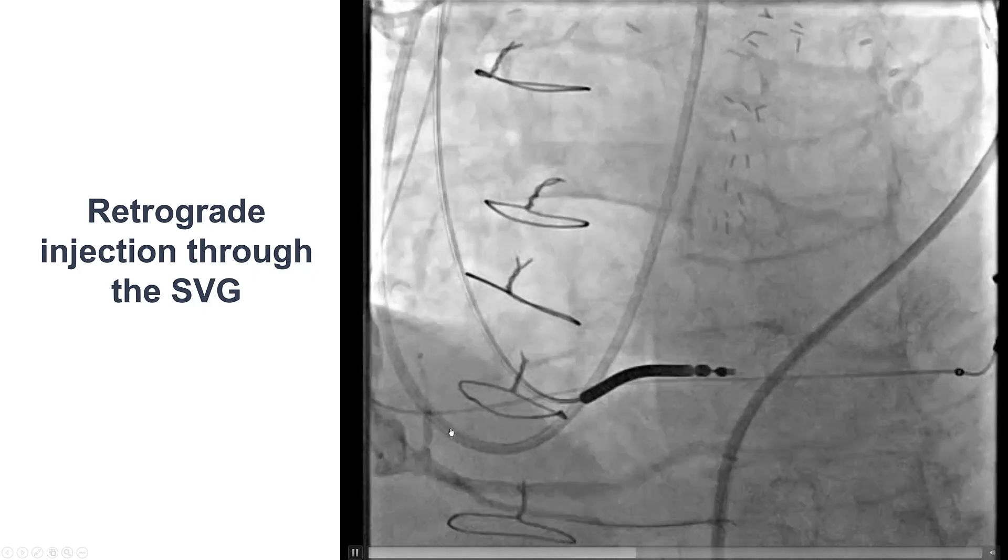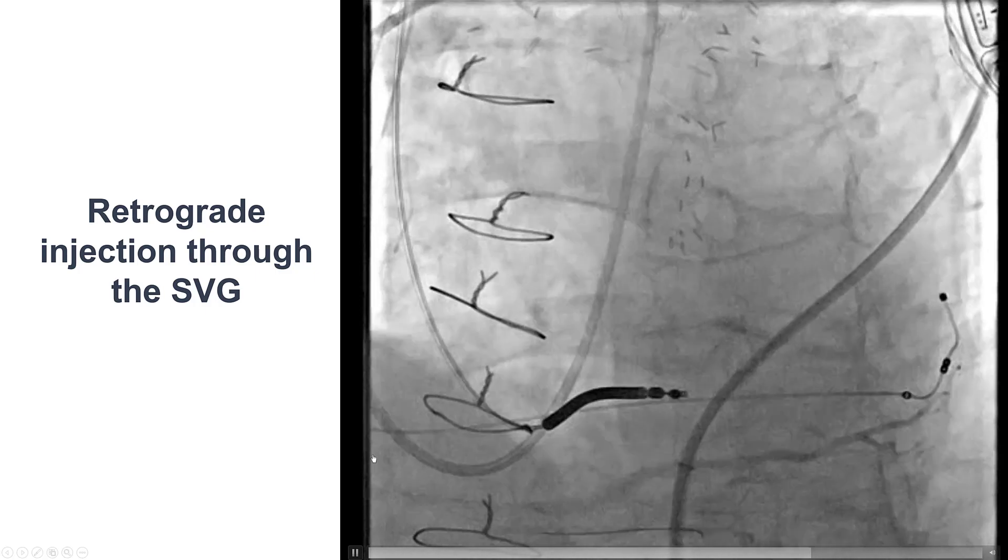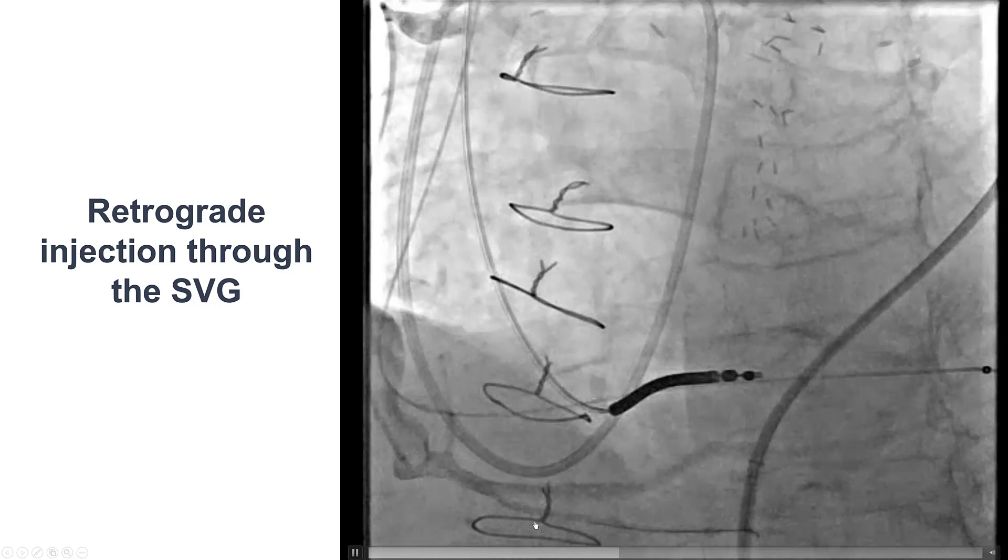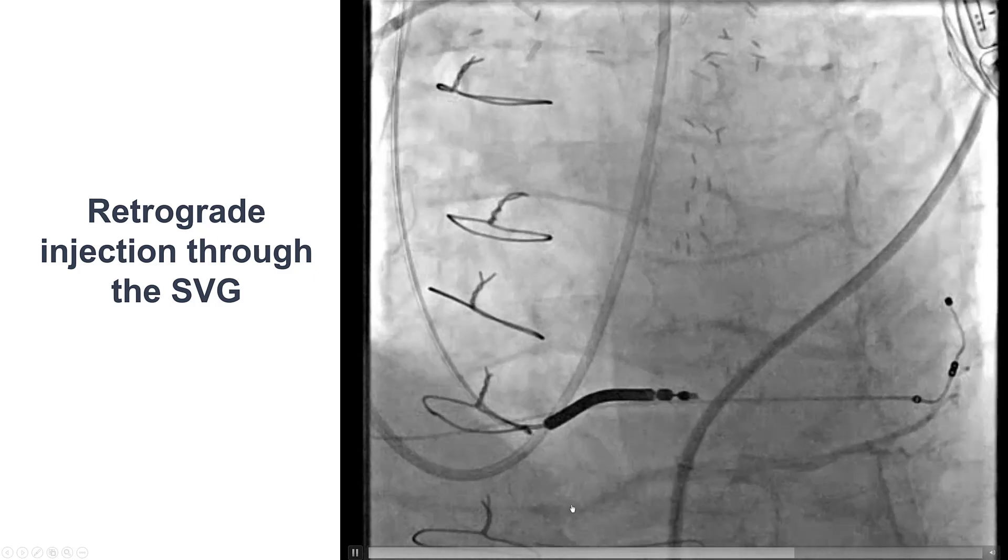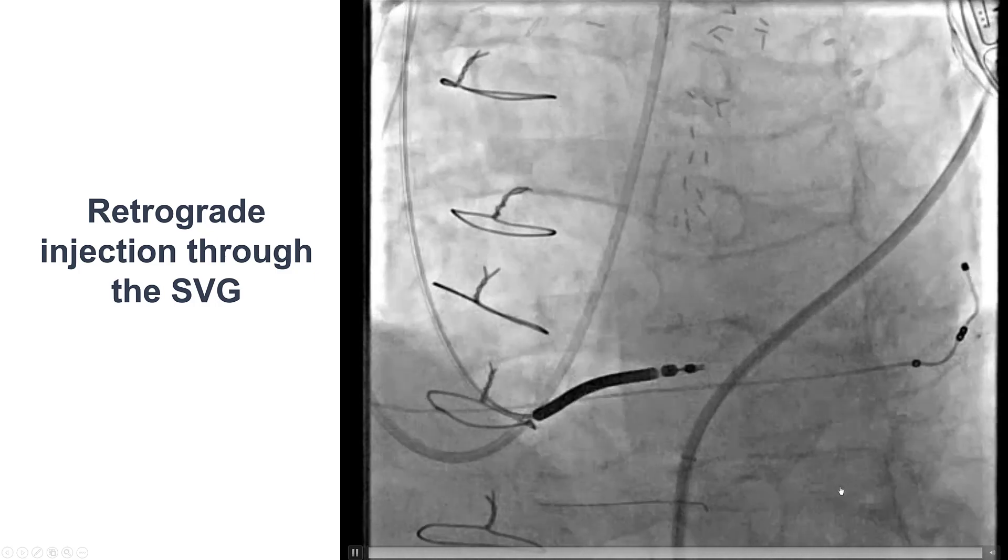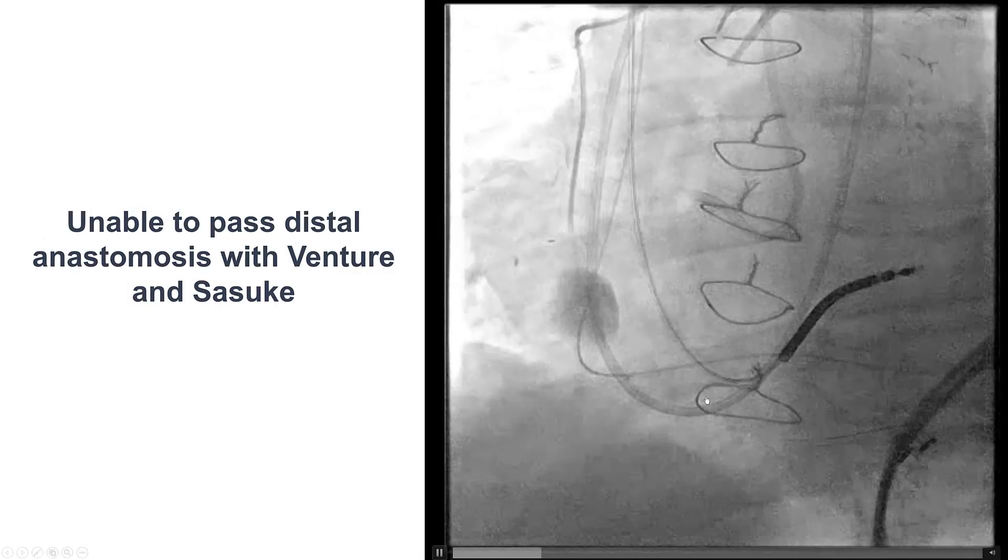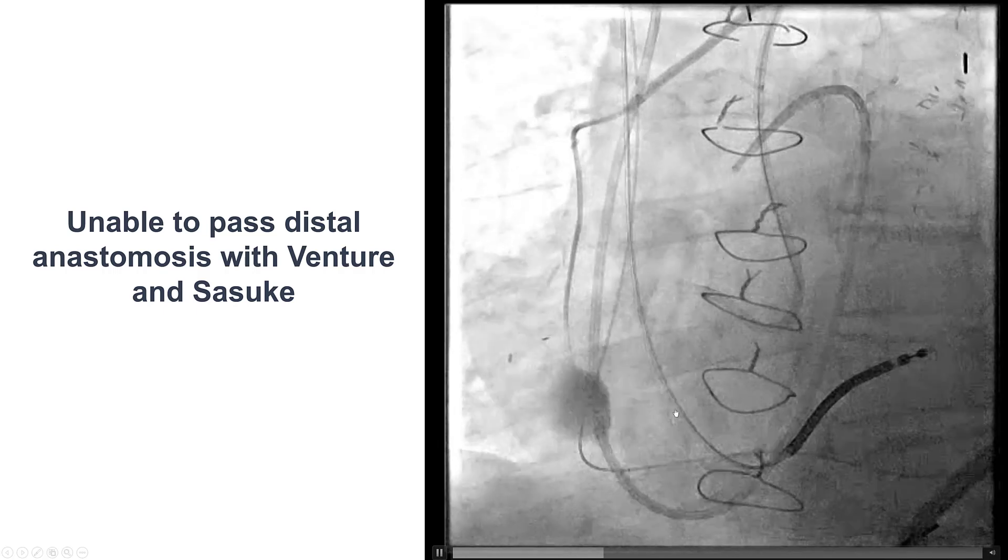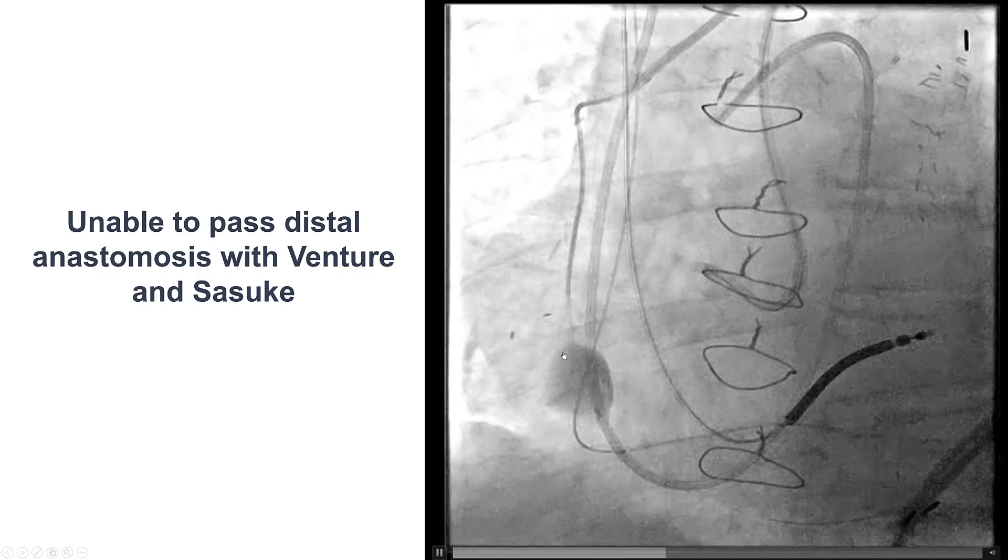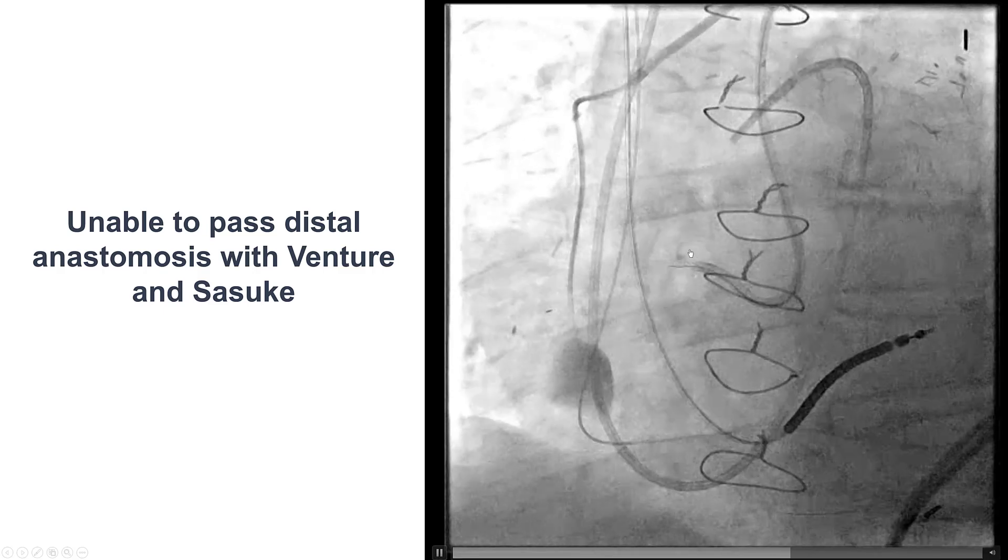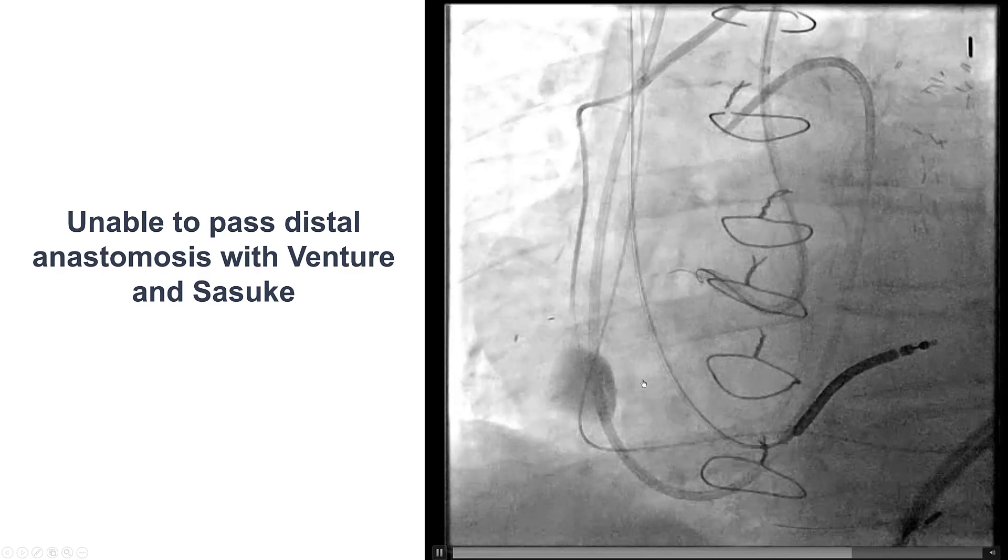We were able to advance the guide extension through the SVG aneurysm and perform an injection. And now we can visualize a little better the distal vessel, which is of good size with a large right posterolateral vessel. We did multiple attempts to pass a guide wire retrograde from the saphenous vein graft into the distal right coronary artery going towards the proximal side, but we were unable to do that.